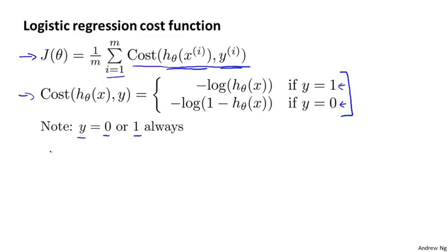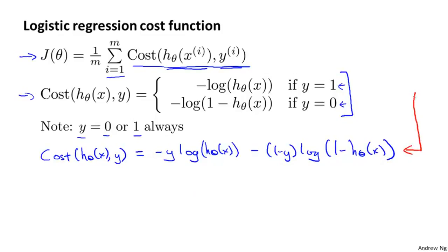Concretely, we can write out the cost function as follows: Cost of h of x comma y equals minus y times log h of x minus 1 minus y times log 1 minus h of x. This expression is an equivalent or more compact way of writing out this definition of the cost function that we have up here. Let's see why that's the case.